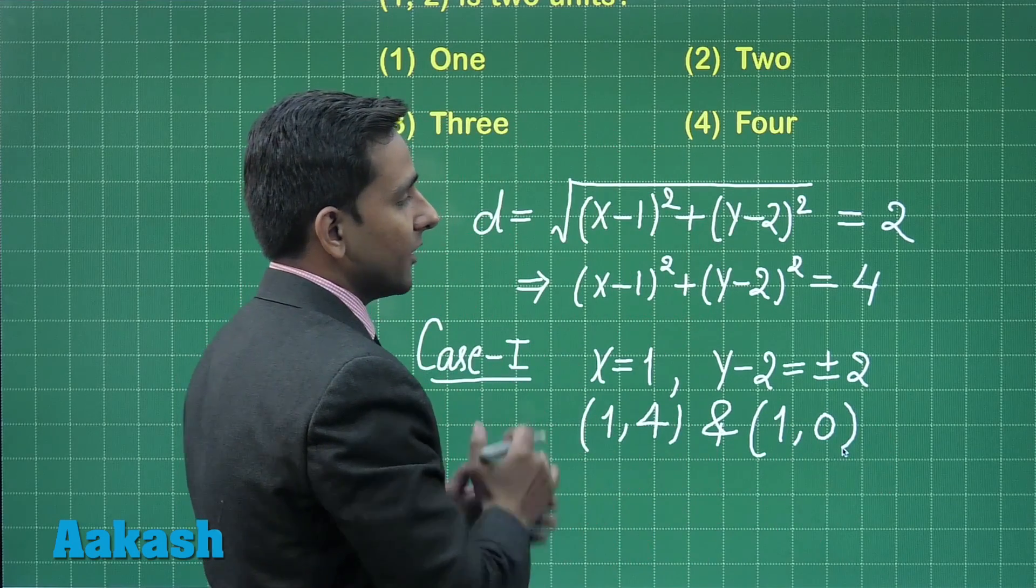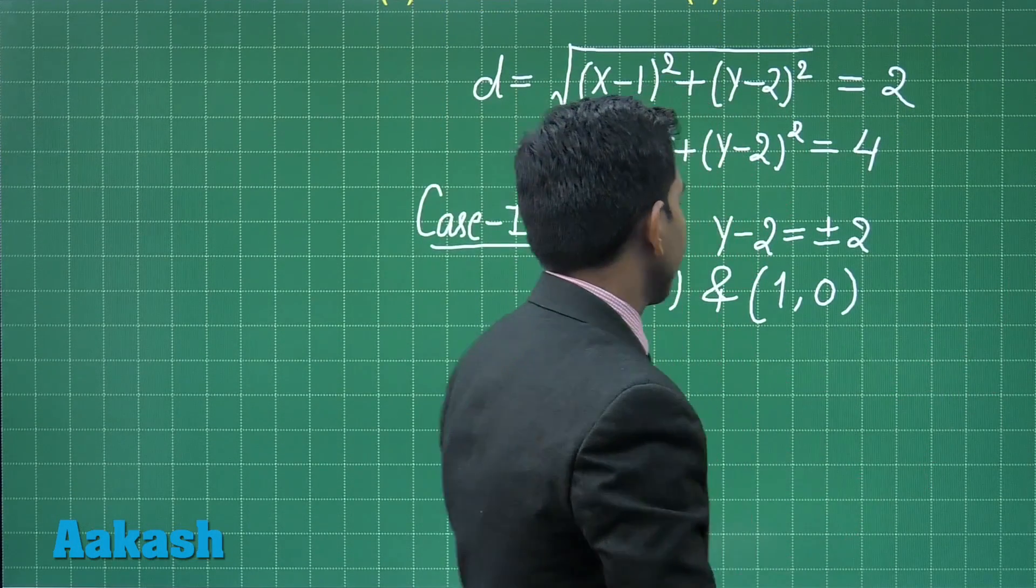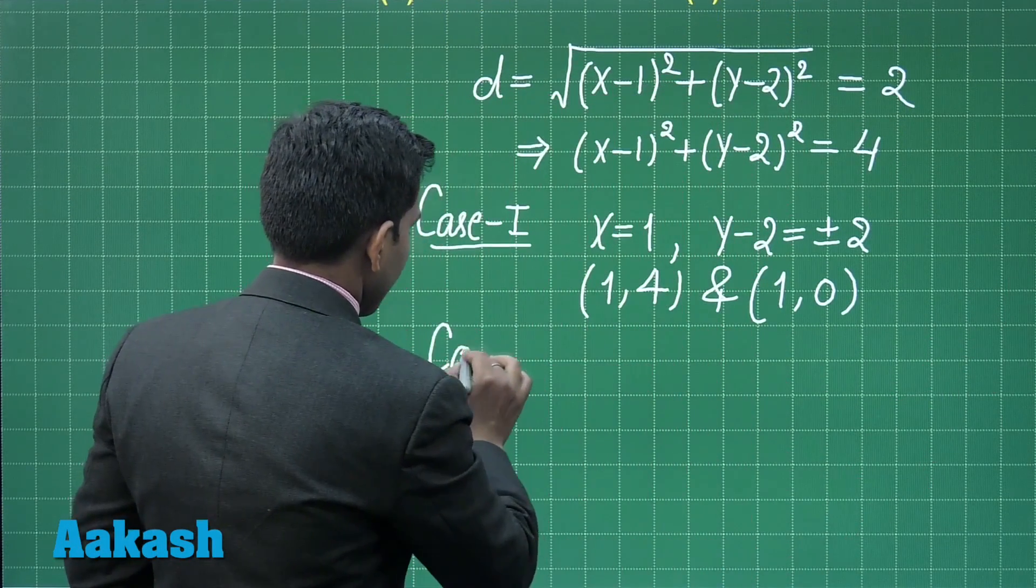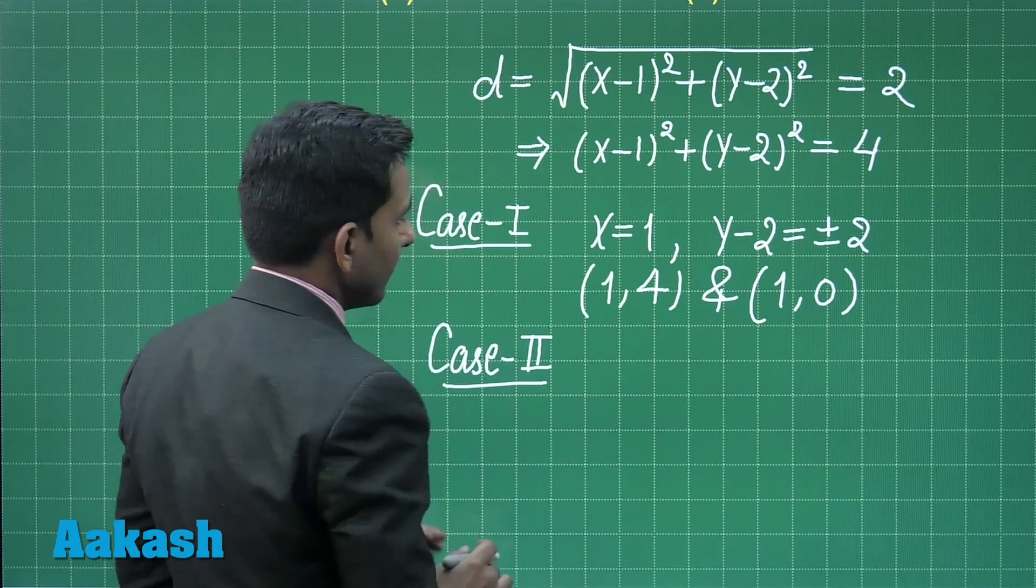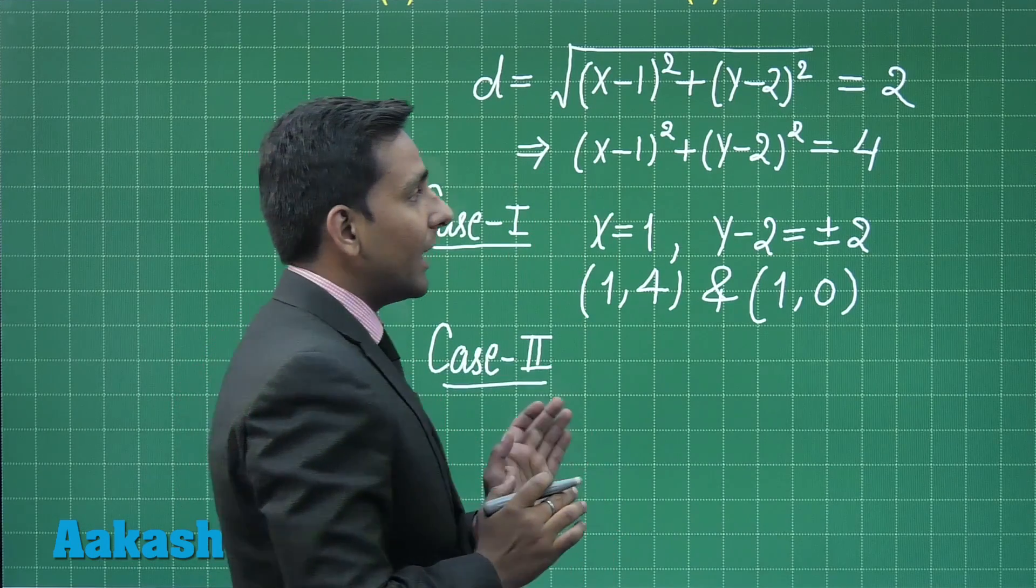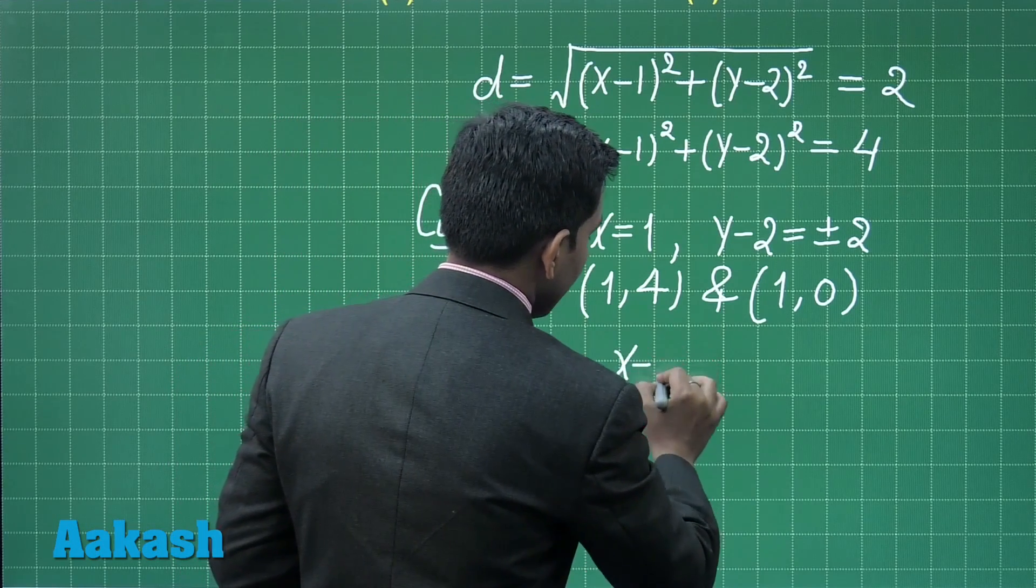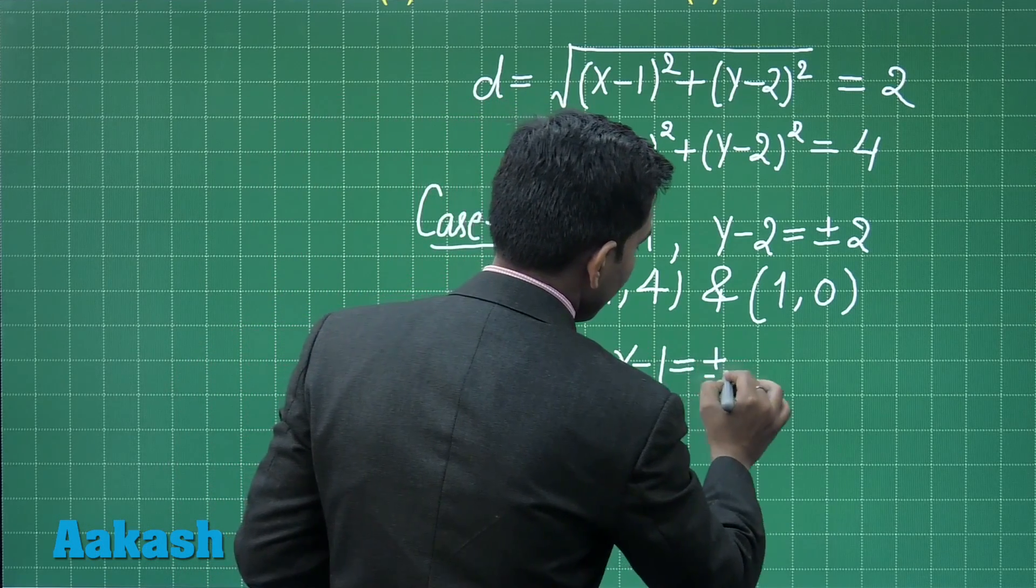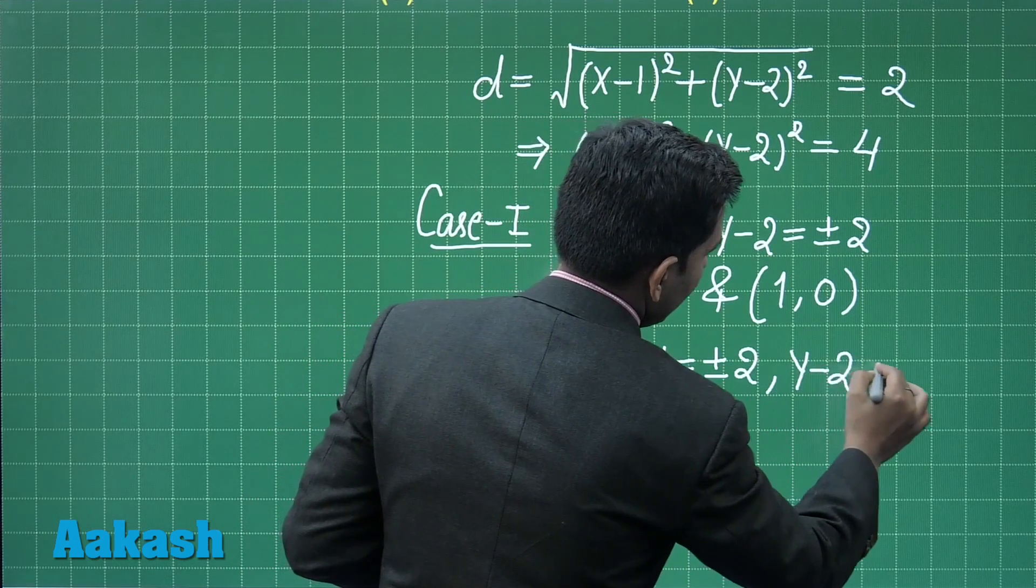We have 2 integral coordinates for point (x, y). Now Case 2: when (x minus 1) squared equals 4 and (y minus 2) squared equals 0. In that condition, x minus 1 equals plus or minus 2 and y minus 2 equals 0.